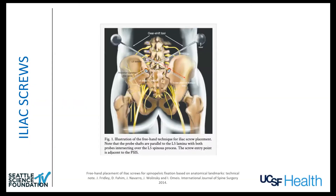How do we do this? Iliac fixation starts with the starting point at the PSIS, and you go down the inner and outer table. I've done hundreds of these and don't use fluoroscopy — you can feel the cancellous bone with the awl, and when you get to a hard point you've reached cortex. It's a relatively simple procedure, but the downside is that these screws tend to be prominent and bone has to be removed. In the setting of an MIS procedure, there's a bit more work involved with an iliac screw.